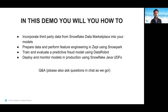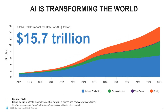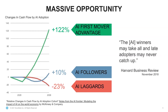Before we dive into the demo, I'd like to quickly speak to the importance of incorporating data science and AI into your world. AI is transforming the world, and an estimate we've seen is that AI will boost the global economy by over $15 trillion over the next nine years or so. According to McKinsey, the advantages early AI adopters will gain will widen to a point where laggards won't catch up, creating a real business threat. AI is not just a competitive advantage anymore — it's a business need in every organization.